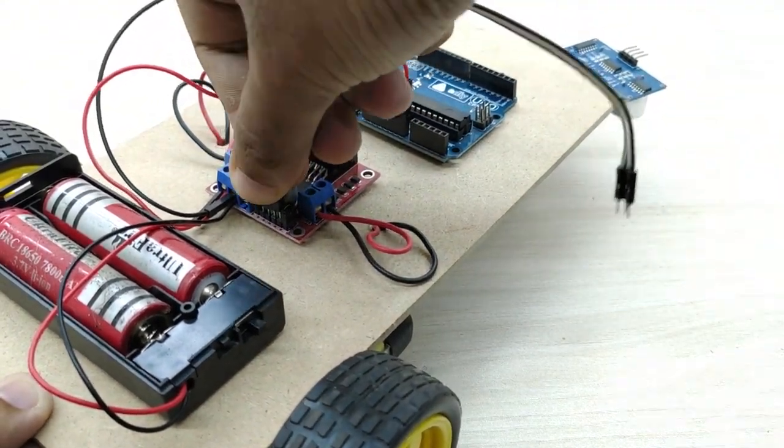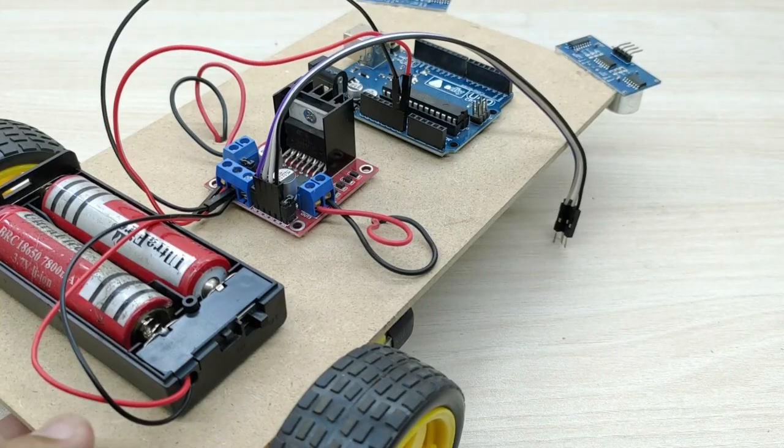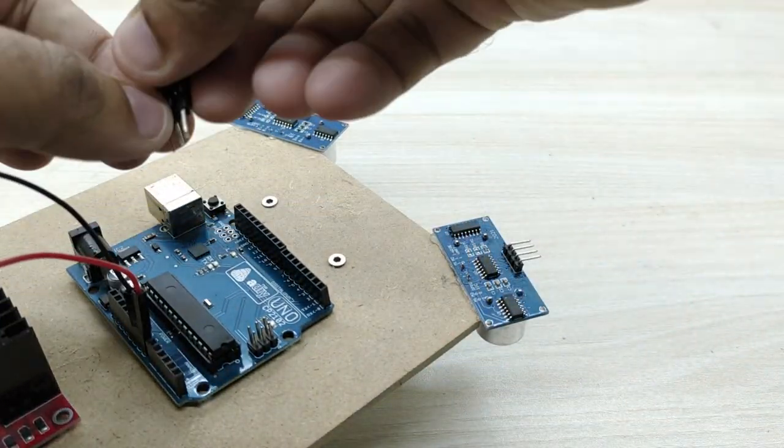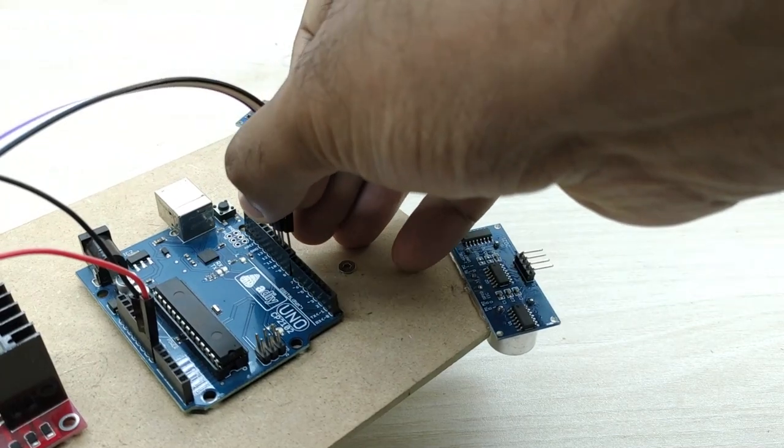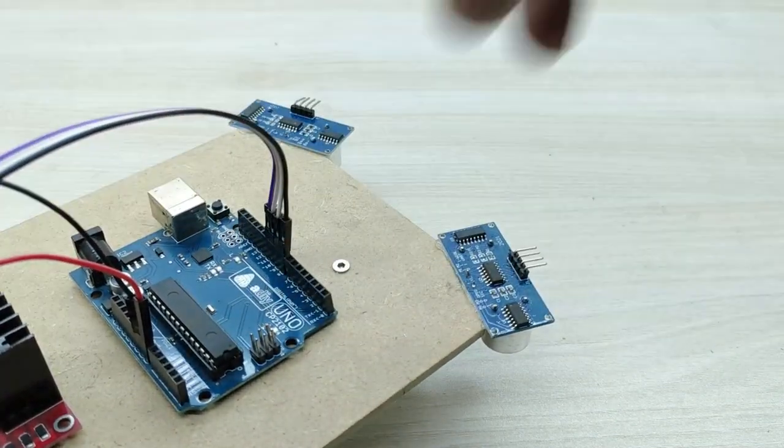Take four jumper wires and connect one end to the motor directional control pins of the driver board. Connect the other end to pin numbers 8, 9, 10, 11 of Arduino board.